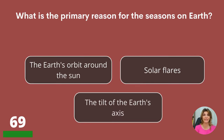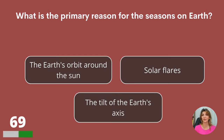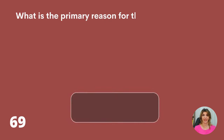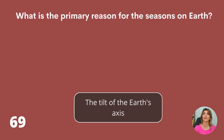What is the primary reason for the seasons on Earth? The Earth's orbit around the Sun, solar flares, or the tilt of the Earth's axis? The tilt of the Earth's axis.